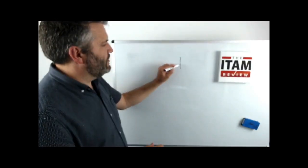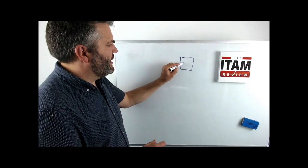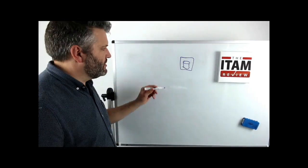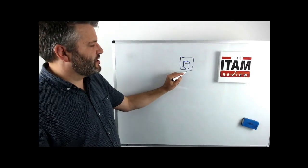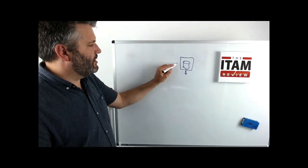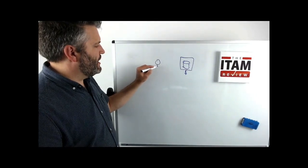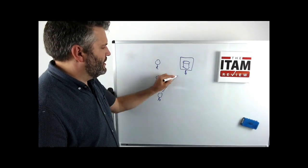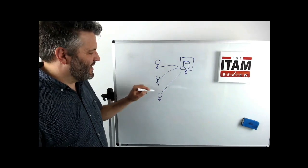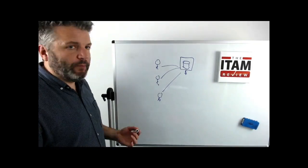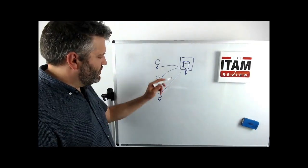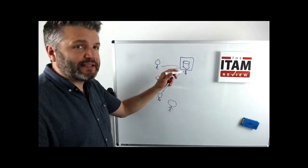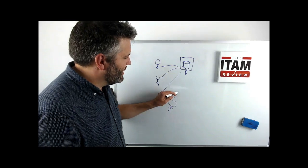So let's say you've got a greengrocers and you've got some cool piece of software for your greengrocers. You might pay for the server, and then you might have three users that access this server, and you would buy a Client Access Licence for each one of those three users. Then if you were to get another member of staff that needed access to this server, you'd buy another Client Access Licence.